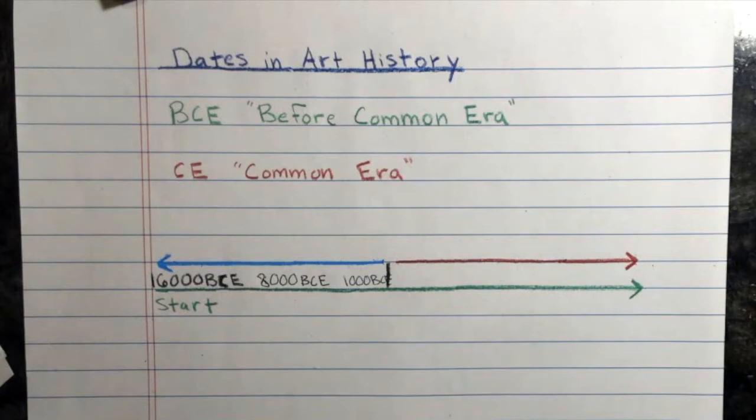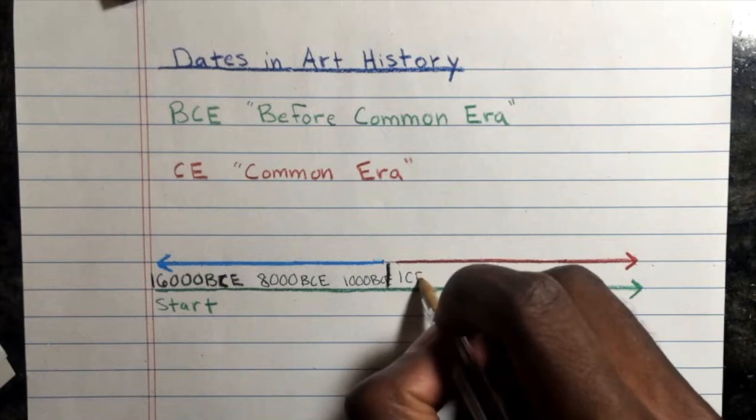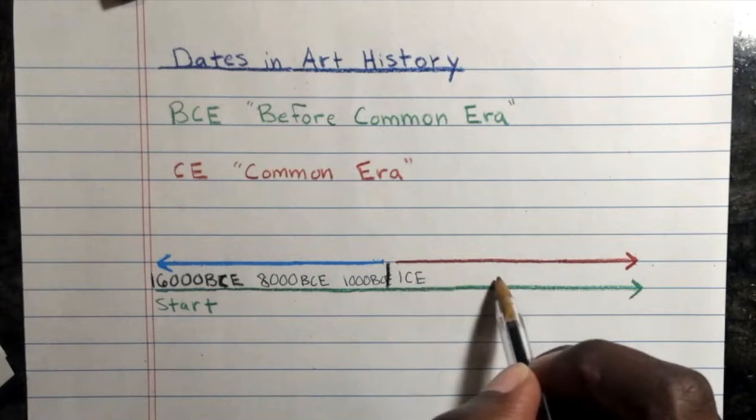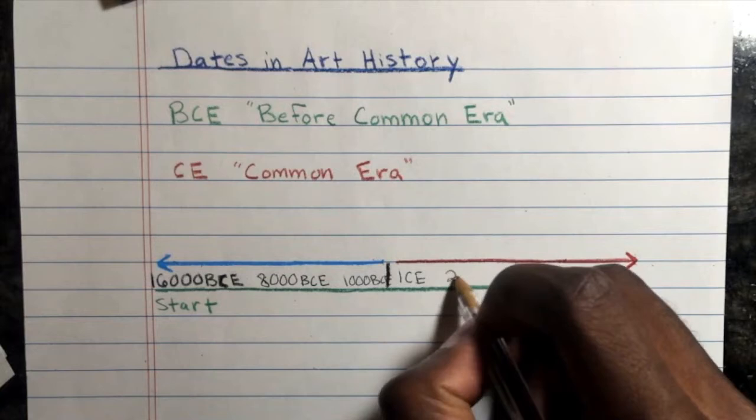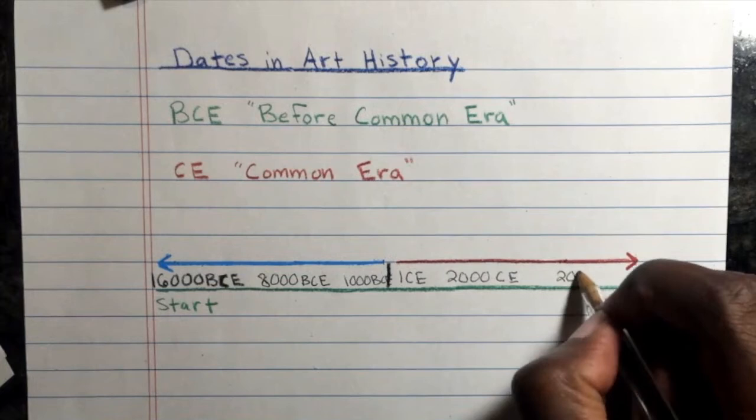Now let's start the Common Era side. Year one — 1 CE. These numbers are going to increase as they move to the right. So for example: 2,000 CE, and then 2,019 CE.